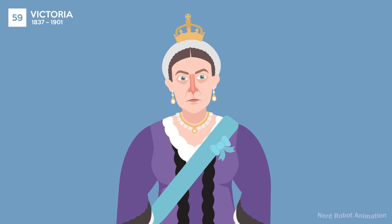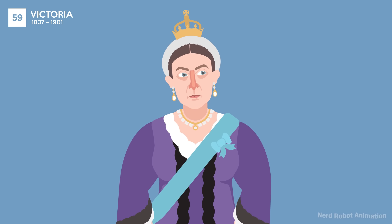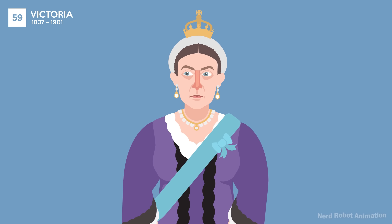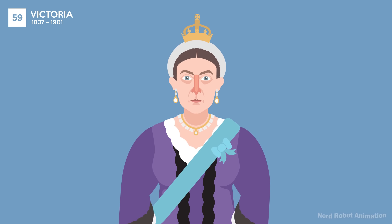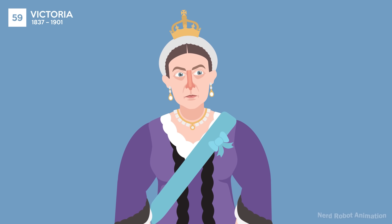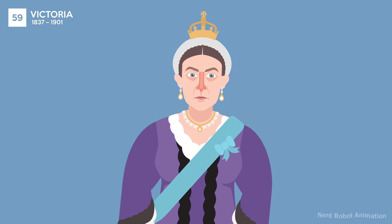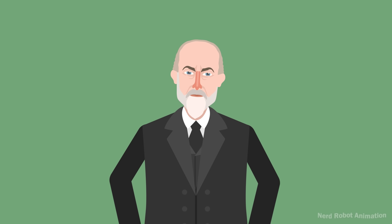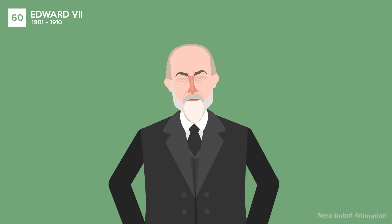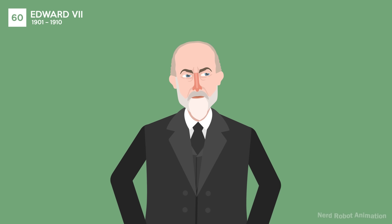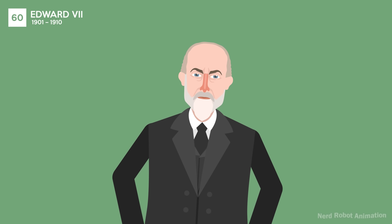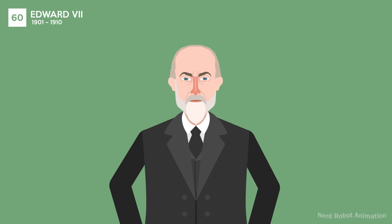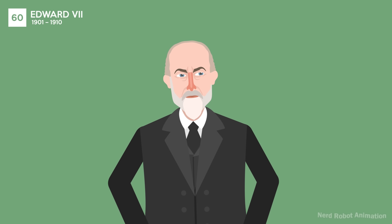Victoria's long reign saw the expansion of the British Empire and significant industrial and social changes. Her era is known as the Victorian Age, characterized by strict morality. Edward VII's reign, known as the Edwardian Era, was marked by elegance and the final flourish of the British aristocracy. He was known for his love of leisure and diplomacy.